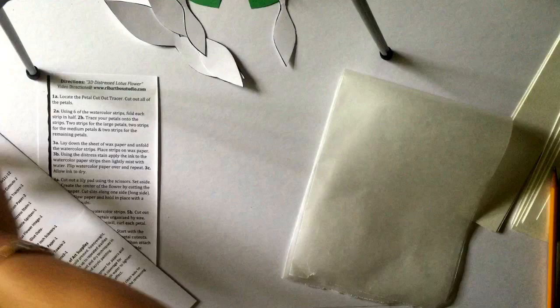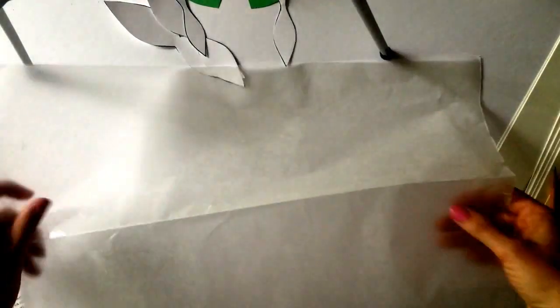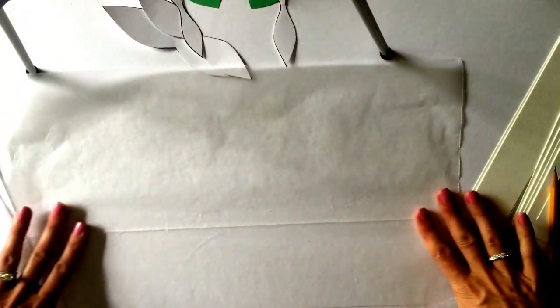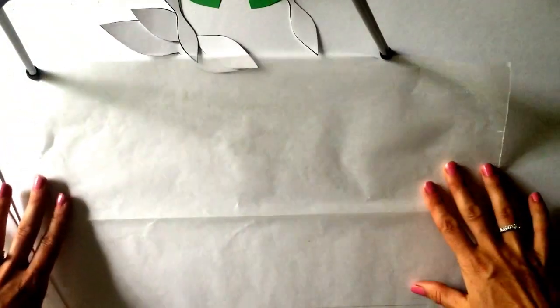Step 3a, lay down the sheet of wax paper and unfold the watercolor strips. Place each strip on the wax paper.